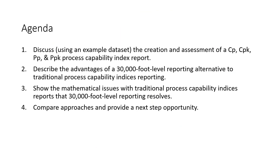The agenda for this session consists of four topics. The first topic is to discuss, using an example data set, the creation and assessment of a CP, CPK, PP, and PPK process capability indices report. Secondly, describe the advantages of a 30,000-foot-level reporting alternative to traditional process capability indices reporting. Thirdly, show the mathematical issues with traditional process capability indices reports that 30,000-foot-level reporting resolves — this is a big deal. And finally, compare approaches and provide a next-step opportunity.